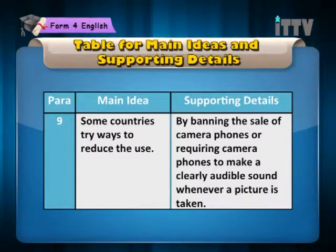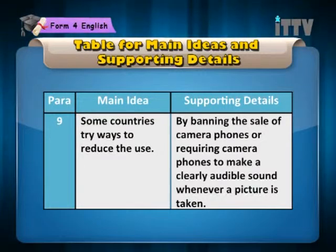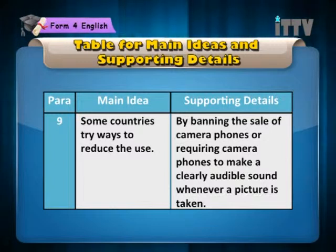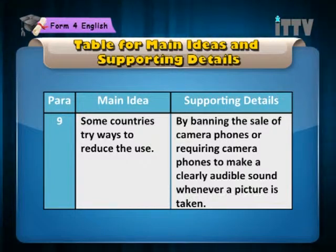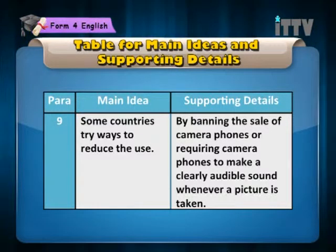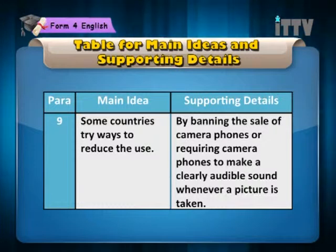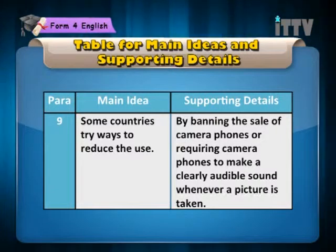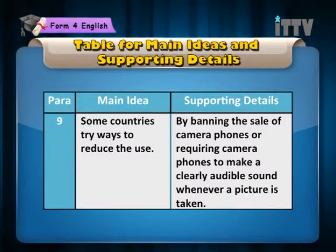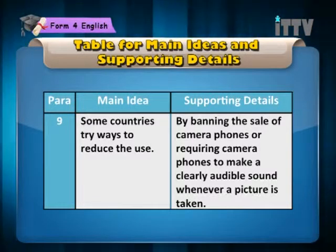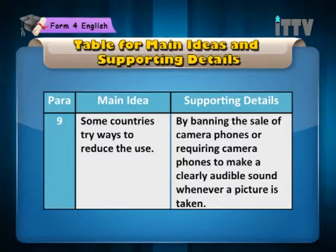Paragraph 9: Main idea — some countries try ways to reduce the use. Supporting details — by banning the sale of camera phones or requiring camera phones to make a clearly audible sound whenever a picture is taken.